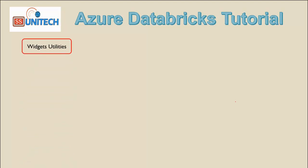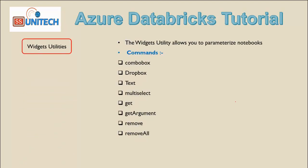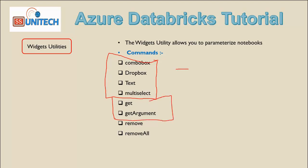Widget Utility is very important and it allows us to create parameters inside the notebook. We will see how we can create parameters and read data from them. Using this utility we can implement commands like combo box, dropdown, text, and multi-select. By using get and getArgument we will read the parameter values, and by using remove we will remove these parameters from the notebook.